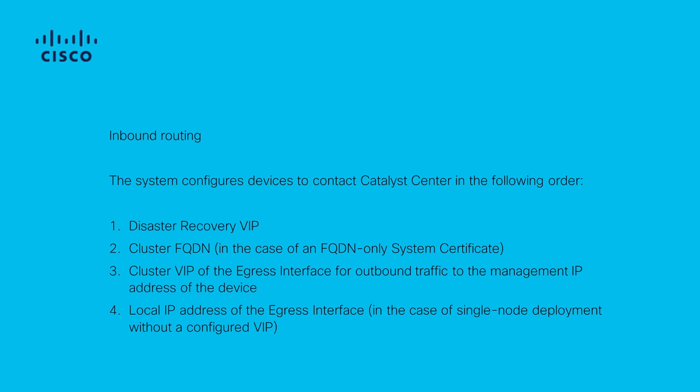If no VIPs are configured, then the interface's local IP will be used instead. In the case of an FQDN-only certificate deployment, the FQDN will be configured on devices, and it is up to the DNS architecture to ensure that the correct interface VIP or IP is resolved by the client. For disaster recovery deployments, the disaster recovery VIP will always be configured.